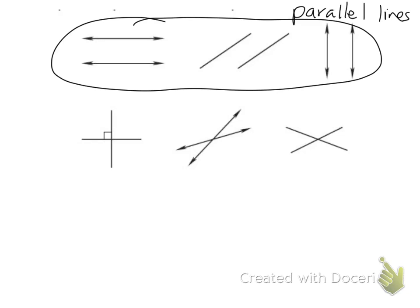Parallel lines always stay the same distance apart. Thinking of train tracks can help you get an idea of parallel lines. Lines on the same surface that are not parallel are called intersecting lines.